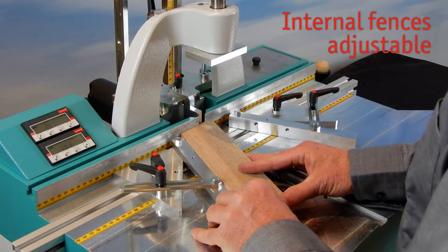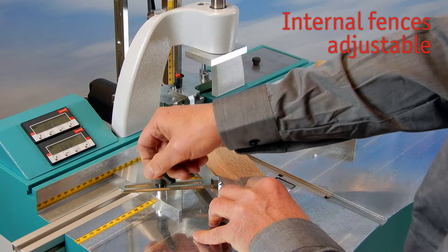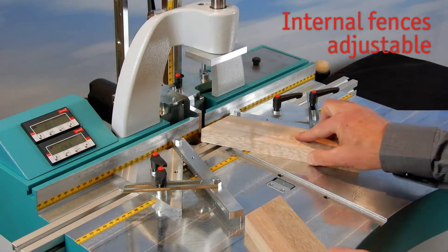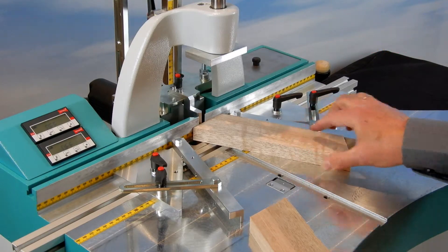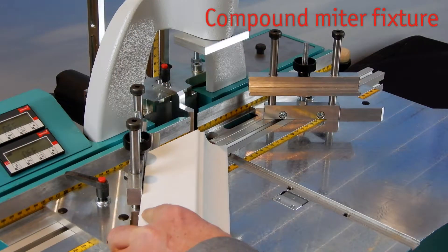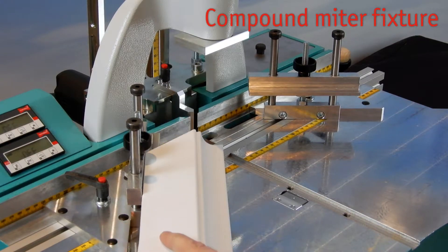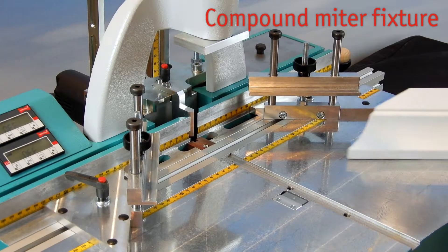Adjustable internal fences for other angles than 45 degrees. This fixture ensures a perfect seat of compound miter profiles, for example an architrave profile.